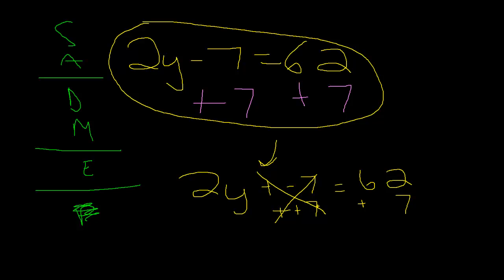so that these cancel out. We're adding positive 7, so these two cancel out. But if we do one side, we have to do the other side, so now we get 69 equals 2y.